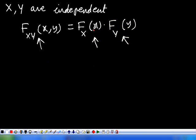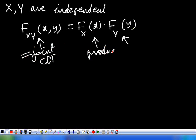That is, if the two random variables X and Y are independent, the joint distribution function is equivalent to the product of the marginal distribution functions. Here f_X(x) is the marginal distribution of X, and f_Y(y) is the marginal distribution of Y. So the joint distribution is equivalent to the product of the marginal distributions.